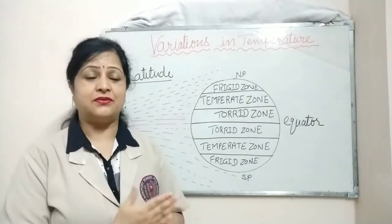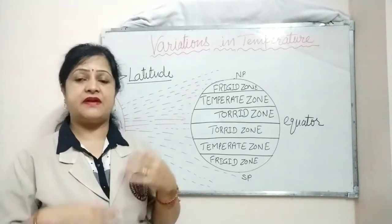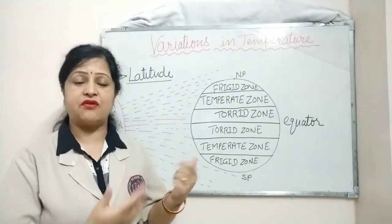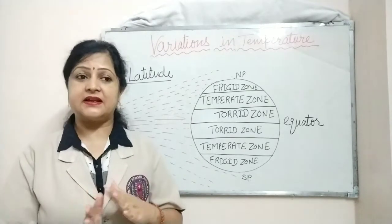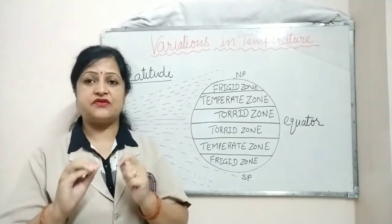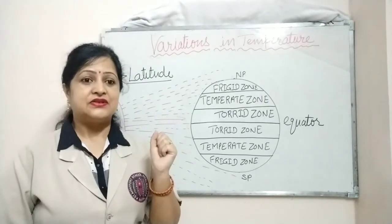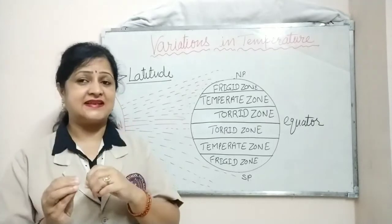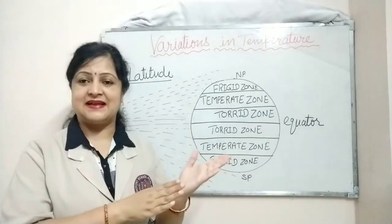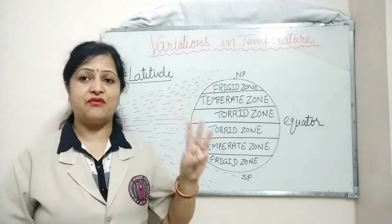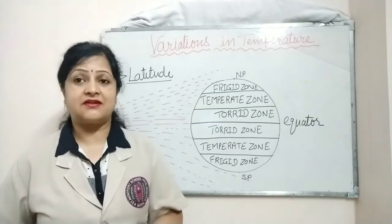The temperature at a particular place never remains constant — it varies with the time of day as well as with the time of year. We have also calculated the average temperature and the range of temperature for one day as well as for the whole year. Temperature not only varies at one place, but it also varies from place to place. There are mainly three causes of the variation of temperature from place to place, and we will discuss all three causes one by one.